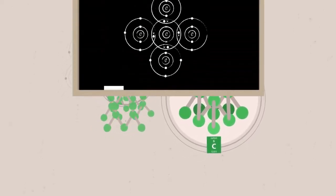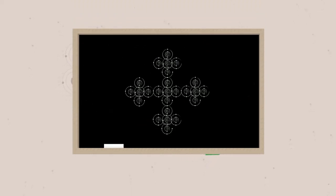If every carbon atom forms four bonds with four other carbon atoms, and each of these forms four bonds with four other carbon atoms, and each of these forms four bonds, we very quickly end up with a very large structure.